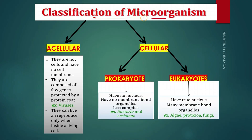Now we will discuss the classification of living microorganisms. All microorganisms are classified into two groups: acellular and cellular. Acellular means there is no cell — they don't have any cell membrane. They are composed of few genes protected by a protein coat, having only DNA material and a protein cover. Examples are viruses. They can live and reproduce only inside a living cell.